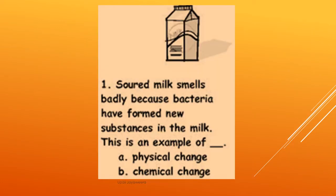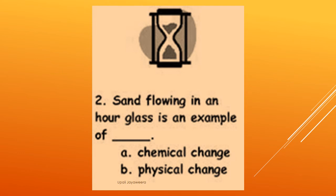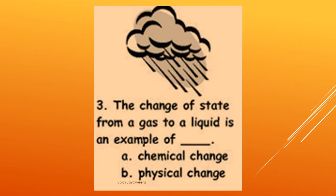Now we'll discuss some questions. Question one: sour milk smells badly because bacteria have formed new substances in the milk. Is this an example of physical change or chemical change? New substances have formed, so it's a chemical change. Question two: sand flowing in an hourglass — is it a chemical change or physical change? Nothing happens to the chemical composition of sand, so it's a physical change. Question three: the change of state from a gas to a liquid — is it a chemical change or physical change? Gas is converted into a liquid; change of state takes place, so it's a physical change.